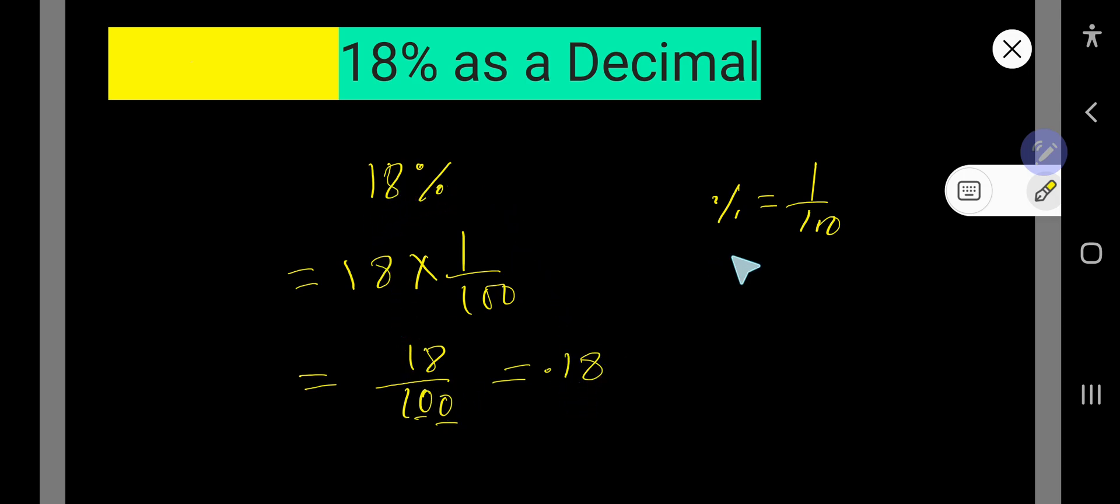That is, 18% as a decimal is 0.18. Here is another way to convert 18% as a decimal. We know that percent means 1 over 100. Now divide this 18 by 100. So look, 100 goes into 18 how many times? 0 times.